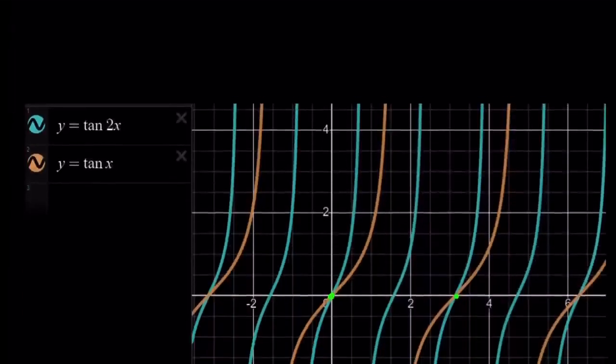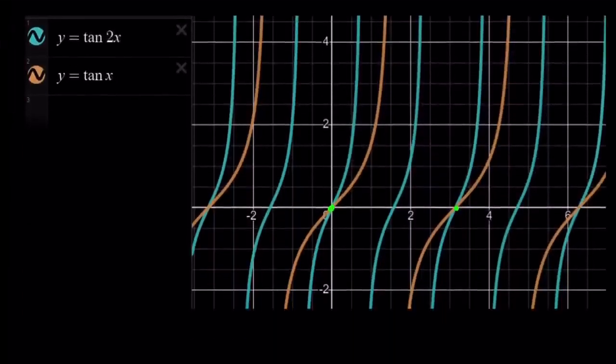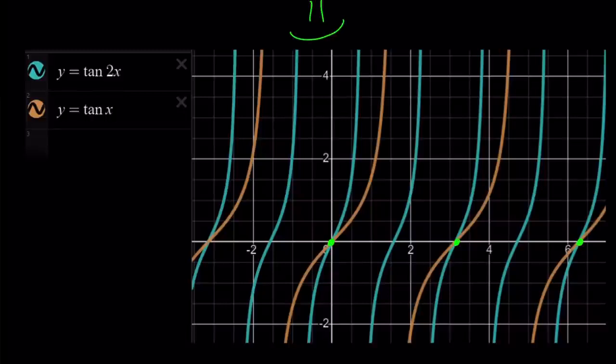Okay, let's go ahead and take a look at the graph and see what it means. So we have y equals tangent 2x and tangent x. I graphed them together. As you can see, at 0, at pi, at 2 pi, our graphs nicely intersect. And this brings us to the end of this video.